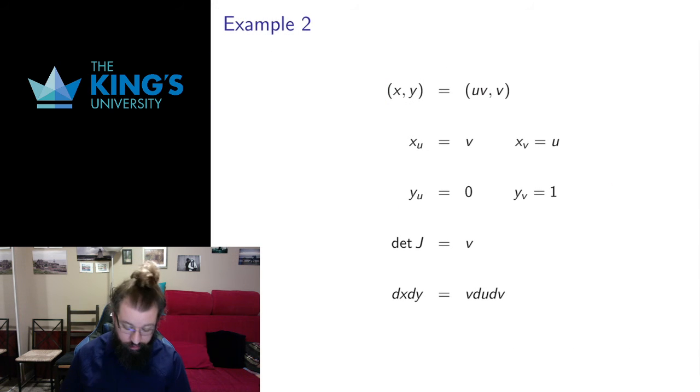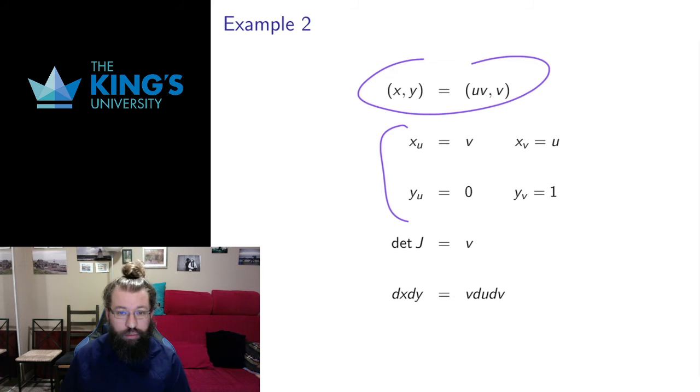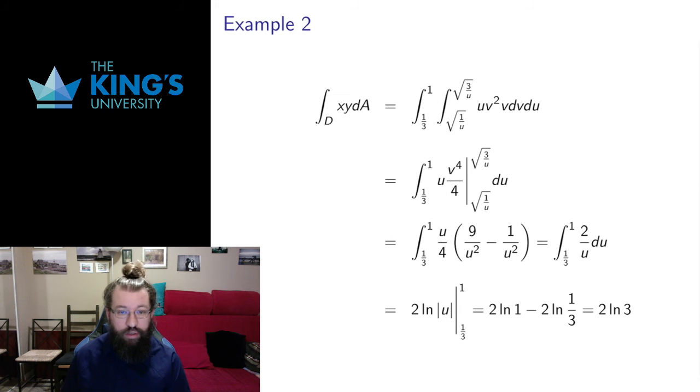Now I need the Jacobian terms. Here's my transformation. I calculate the partial derivatives. I take the determinant of the resulting matrix, and I get that the Jacobian here is v. So dx dy will be replaced by v du dv. And then I do all the pieces.